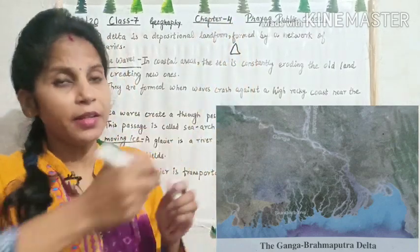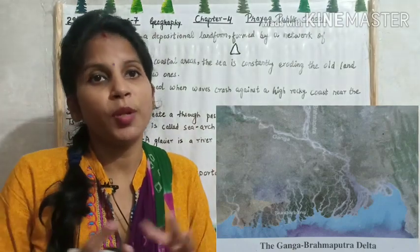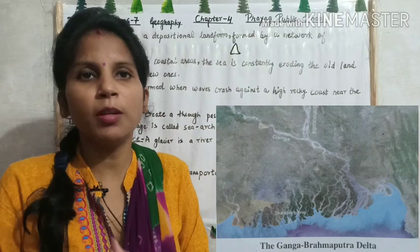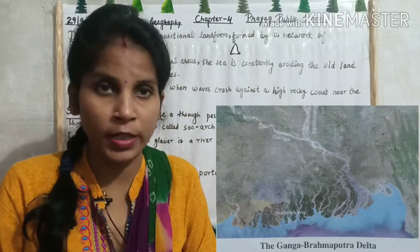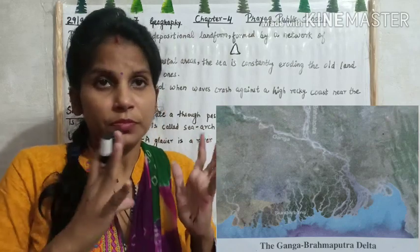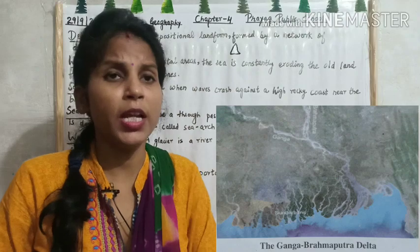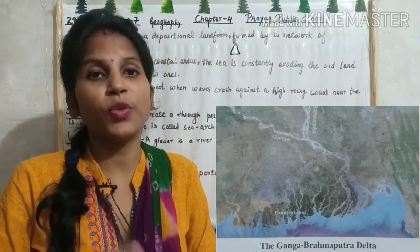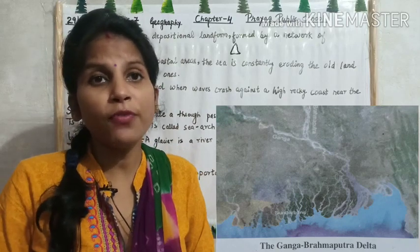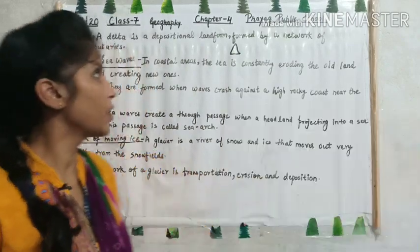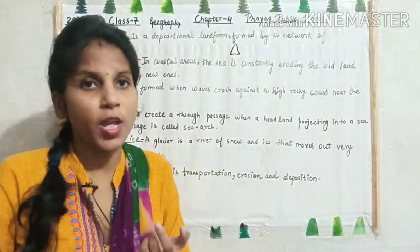A delta is triangular in shape. The largest delta in the world is the Ganga-Brahmaputra delta, also known as the Sundarbans delta, which is famous for the sundari trees because only sundari trees grow here. The Bay of Bengal forms most of the delta — rivers draining into the Bay of Bengal form deltas, while rivers draining into the Arabian Sea do not form deltas because they are very small and there is not enough rock material to accumulate.